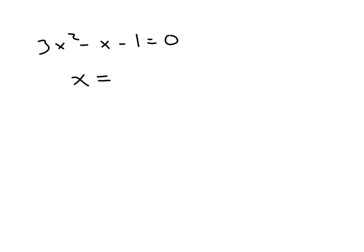So quadratic formula x equals opposite of b, that'd be positive one, plus or minus the square root of b squared, so that'd be one, minus four times a times c, all over two times a.